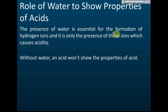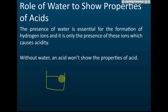The presence of water is essential for the formation of hydrogen ions, and it is only the presence of these ions which cause acidity. Without water, acid won't show the properties of acid. For example, ethanoic acid — CH₃COOH — is liquid at room temperature. If you have pure ethanoic acid with no water inside, you will find that even though it's an acid, this pure ethanoic acid does not show the properties of acid.